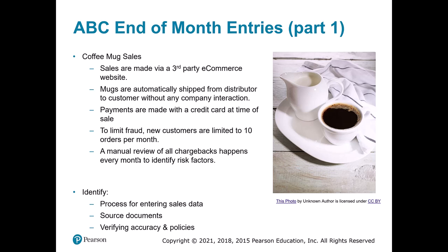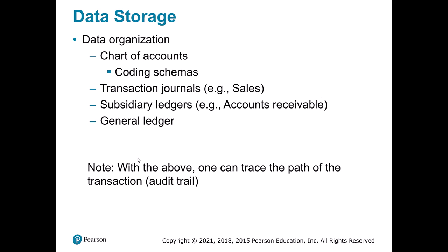For data storage, the first thing we need is a chart of accounts — things like assets, inventory, equipment — basically what accounts do you need. These accounts usually have a coding scheme; for example, all asset accounts start with 01, all expense accounts start with 51. We also have transaction journals, which let us filter down information by customer, and subsidiary ledgers, which trace and filter information to make it easier to work with.